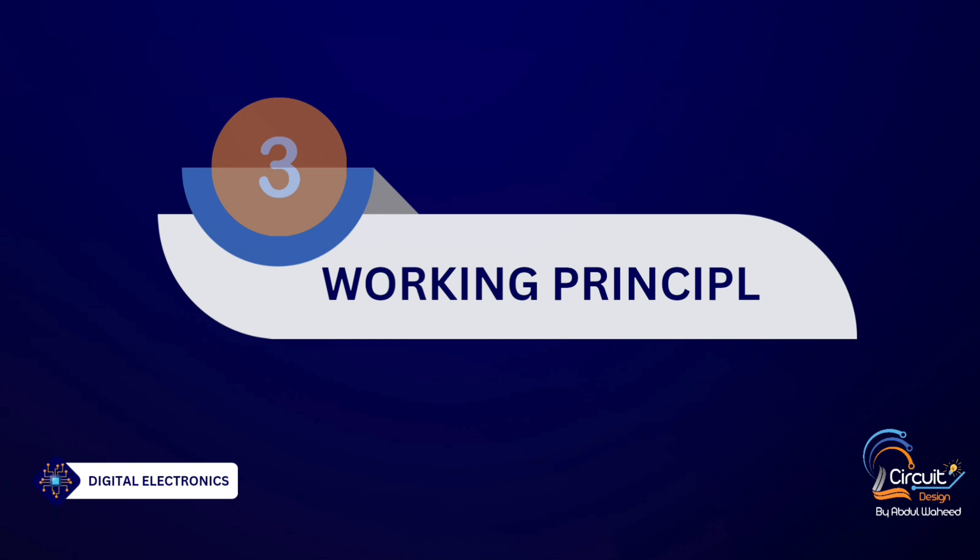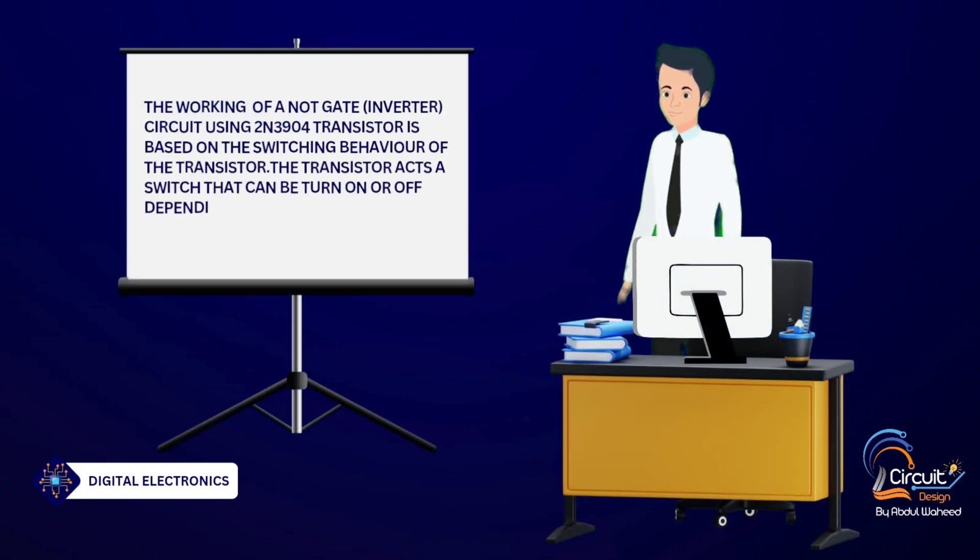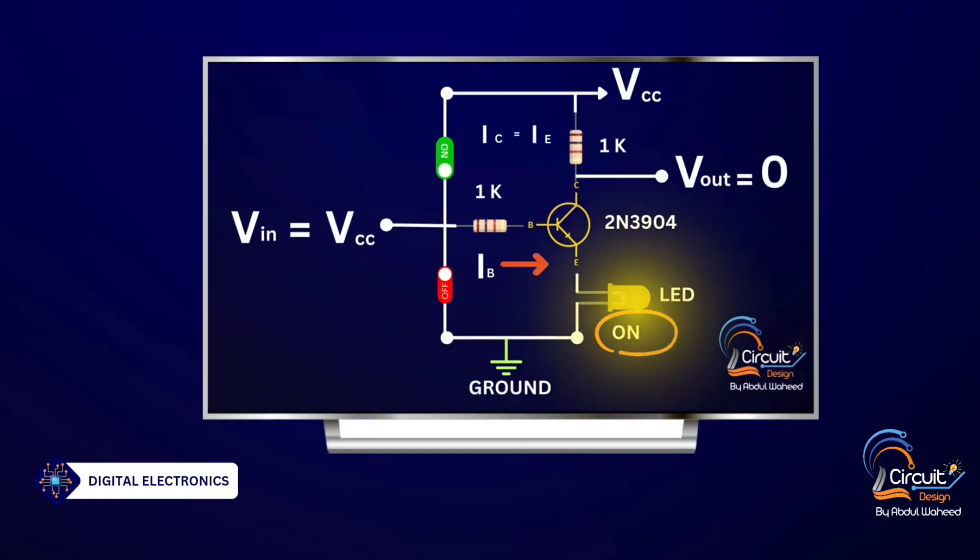Working principle. The working of a NOT gate inverter circuit using a 2N3904 transistor is based on the switching behavior of the transistor. The transistor acts as a switch that can be turned on or off depending on the inputs.